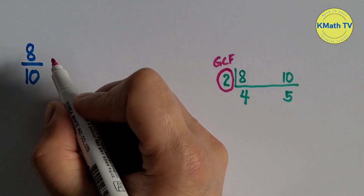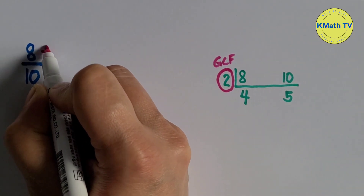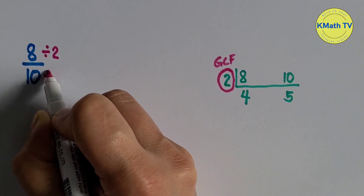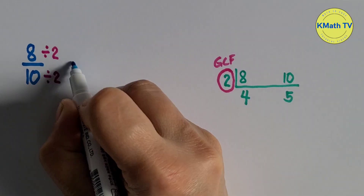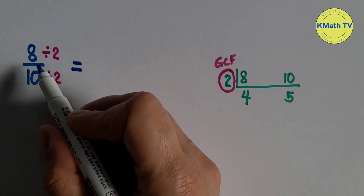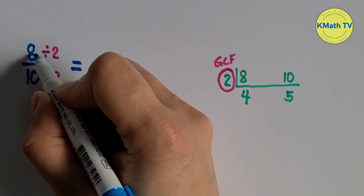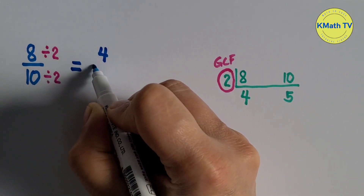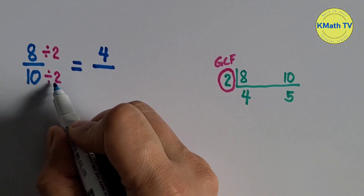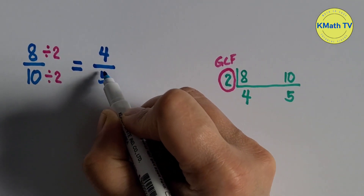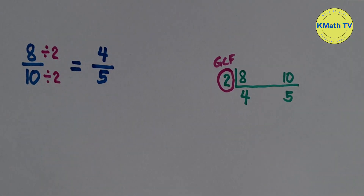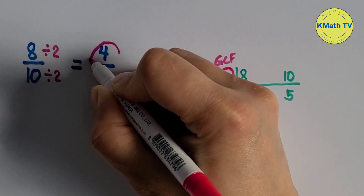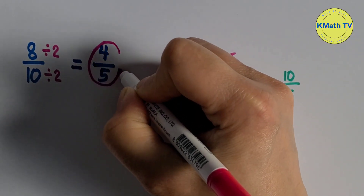Let's use this GCF to reduce the fraction to lowest term. Let's divide the numerator and the denominator by 2. 8 divided by 2 equals 4, and 10 divided by 2 equals 5. The lowest term of 8 tenths is 4 fifths.